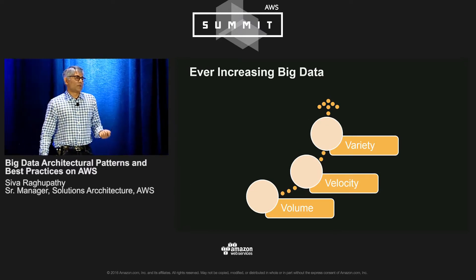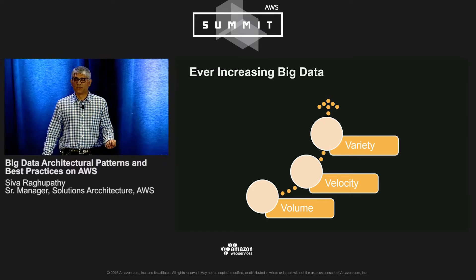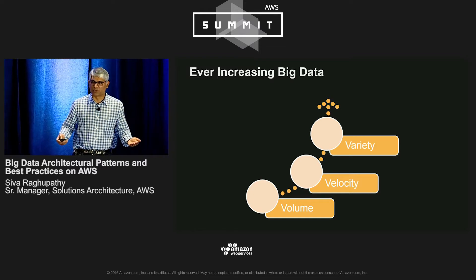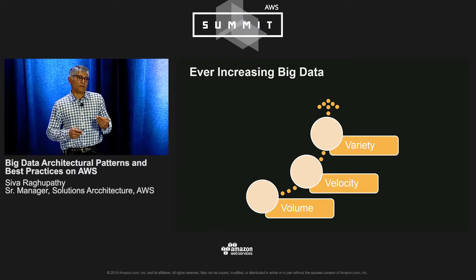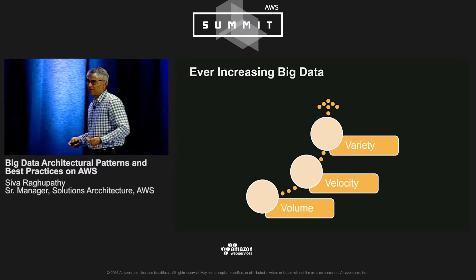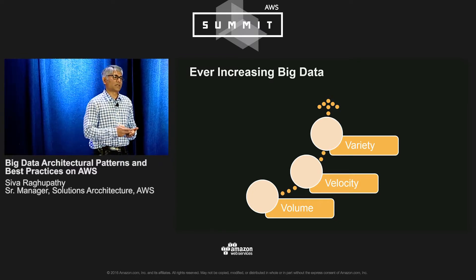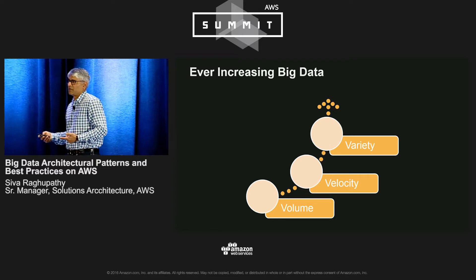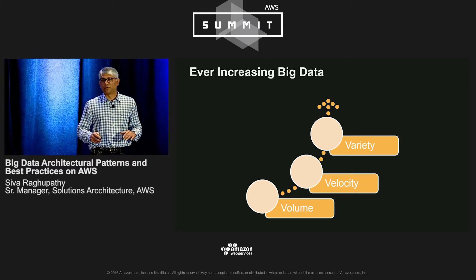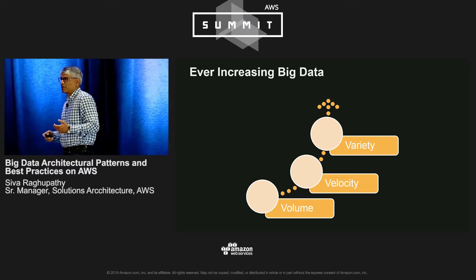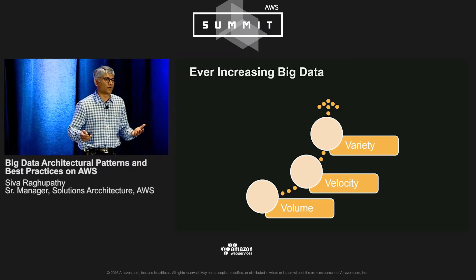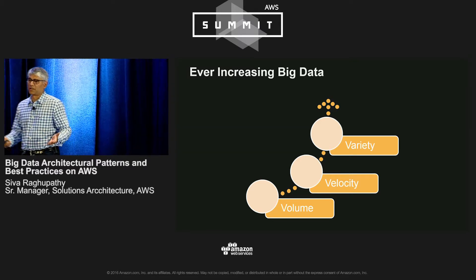The volume, velocity, and variety of big data is ever-increasing. Routinely, customers are building systems that can handle tens of thousands of requests per second. In the case of real-time bidding, there are systems sending about a million requests per second being stored out of DynamoDB. Customers are building systems that can ingest about 150–200 terabytes of data a day. With the advent of IoT and sensors and devices, billions of events are being pumped into AWS for real-time analysis. Even five years ago these systems were hard to build, but nowadays they're being built by a couple of developers in a few weeks.